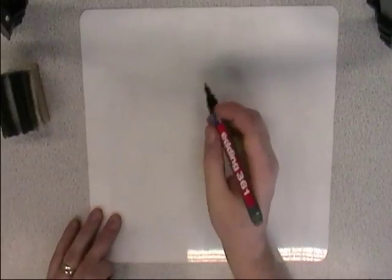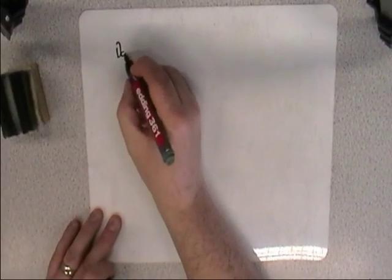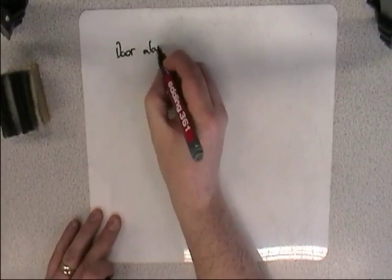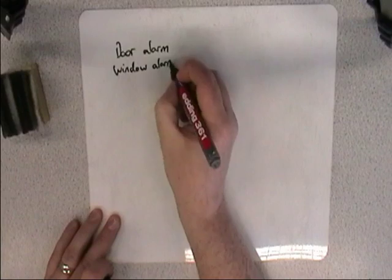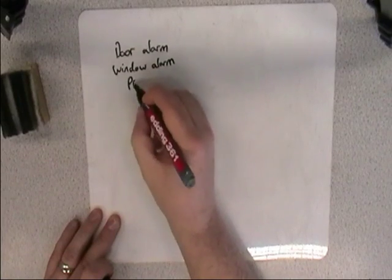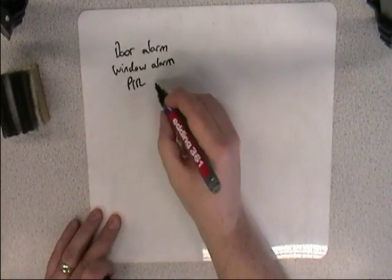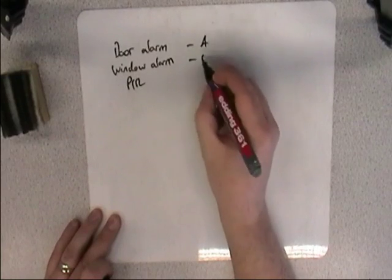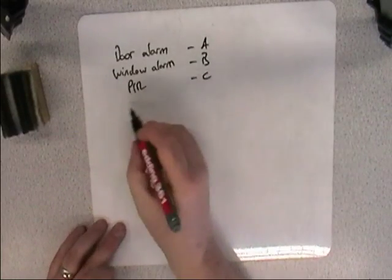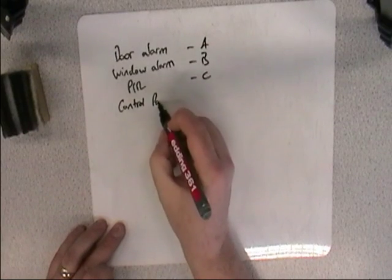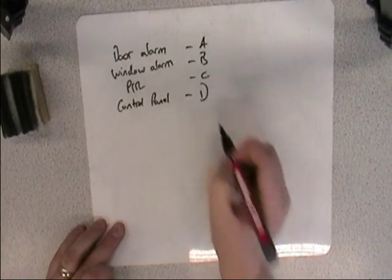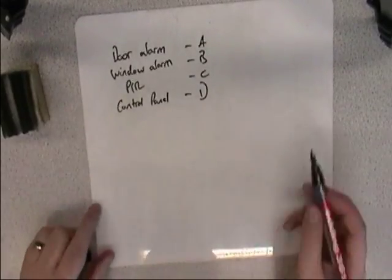So if I was thinking of a burglar alarm system, and I've got a door alarm, and I've got a window alarm, and I've got a PIR sensor, you know, the infrared, the one with the little red dots on, PIR sensor. We'll call them A, B, C. We'll also have the control panel, which we'll call D. So we've got four inputs.